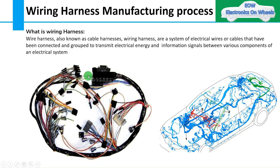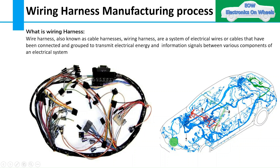Starting with wiring harness — wiring harness, wire harness, or also known as cable harness, is a bundle of wires which is connected to transmit electrical energy and information signals between various components. You can see in these pictures it's just a wire loom. On the right side, you can see how different wiring harnesses are connected with each other — like engine harness, body harness, tailgate harness, door harness, and so on.